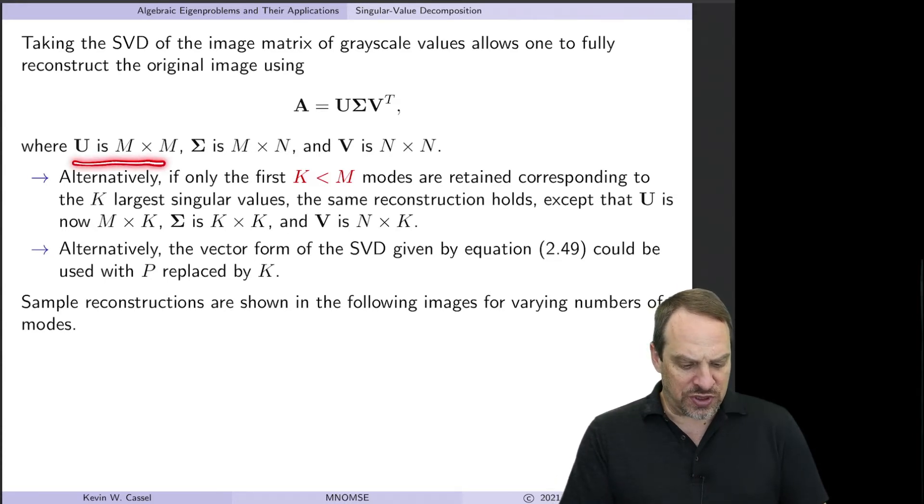In this case, the U is M by M. The sigma is M by N, it's always the same size as the original A. And V is N by N. So U and V are square.